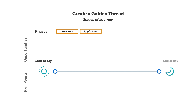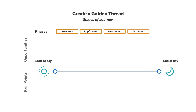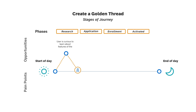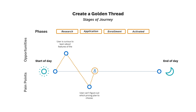Step one: focus on your users. It is important to spend time with them to better understand what they do, how they do it, and how they feel about their responsibilities in the workplace. By mapping out your user's golden thread, their tasks, needs, and pain points become much clearer.